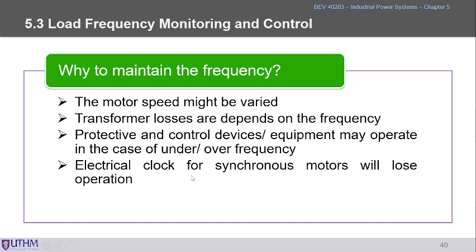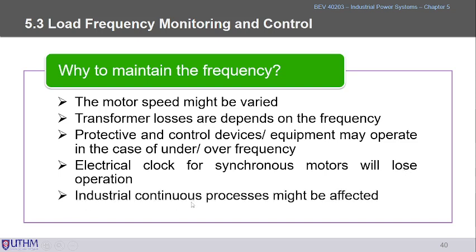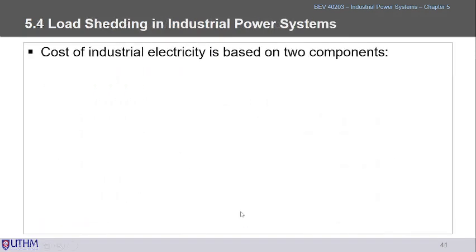Synchronous motors must run synchronized at exactly 50 Hz — you cannot deviate too much. Timers and PLCs in industrial processes also depend heavily on system frequency, so frequency deviations will disturb their operations.